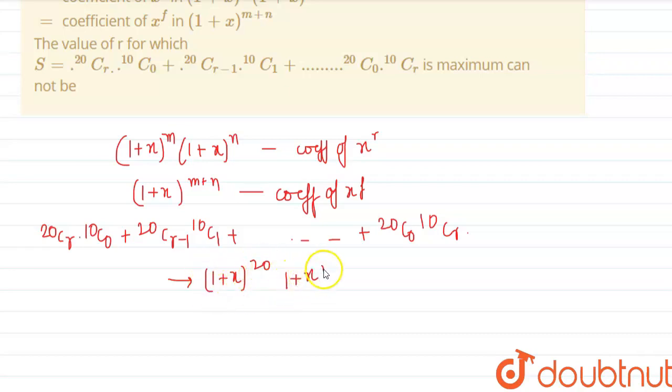So, if we do the same thing, we are finding here the coefficient of x^r. For this, this can be written as (1+x)^30. Now we will find the coefficient of x^r in (1+x)^30.